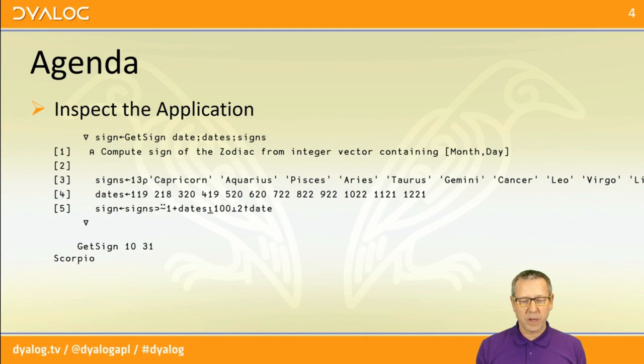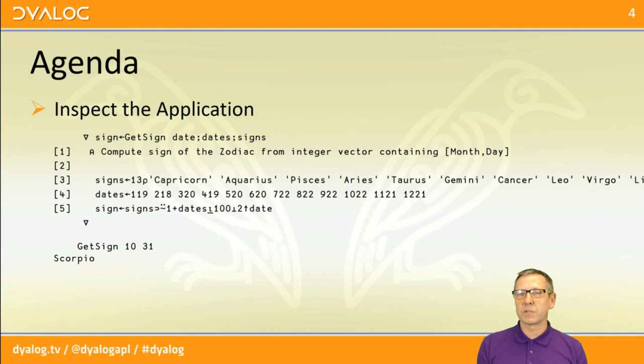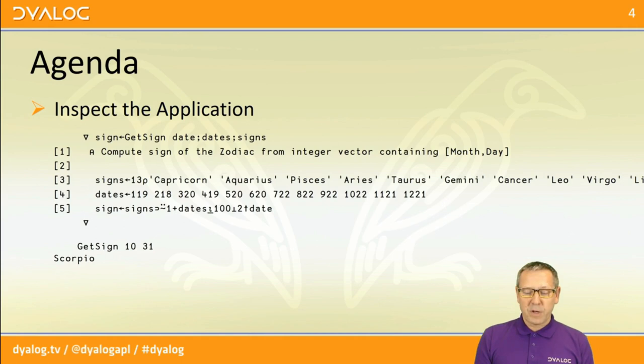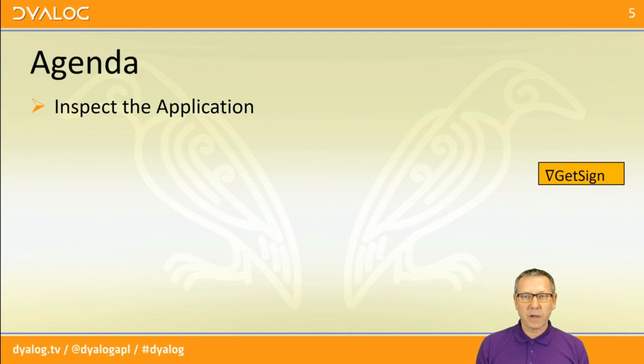To build up an agenda: the first thing we're going to do is inspect the application. It's three lines of code that, given a two-element vector containing a month number and a day number, computes the name of the sign of the zodiac which the Sun was in on that day — which is rather odd because it means that's a constellation you definitely could not see on that day because it's on the other side of the earth. We're going to use that as the microservice that we're going to try and call.